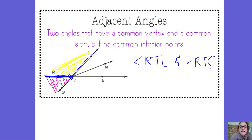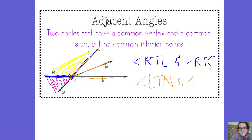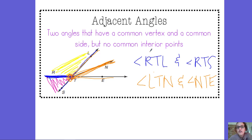Another pair of adjacent angles would be angle LTN and angle NTE. Those are adjacent — they have a common vertex T, they have a common side ray TN, and they're touching each other, but they have no common interior points. Those are just two examples of two pairs of adjacent angles.